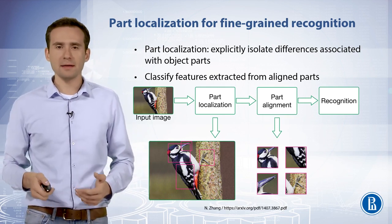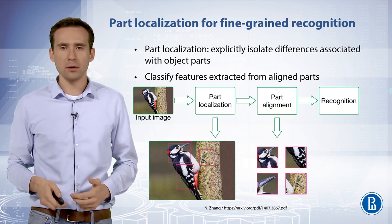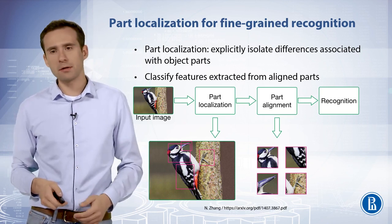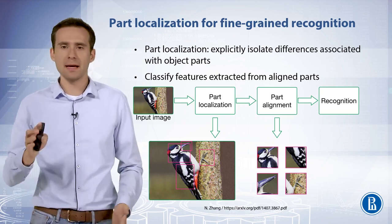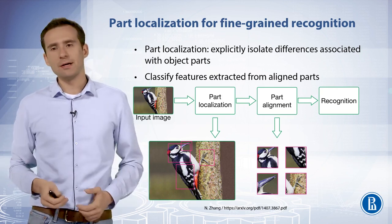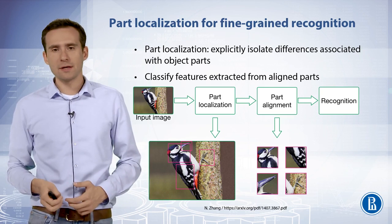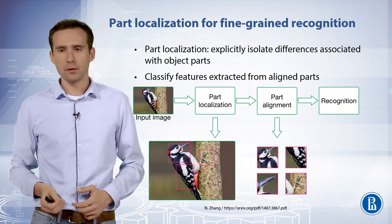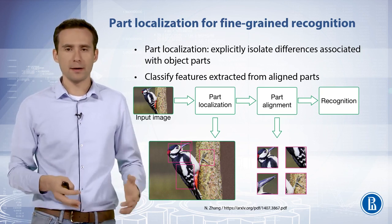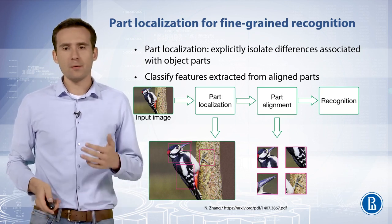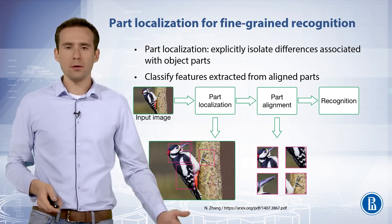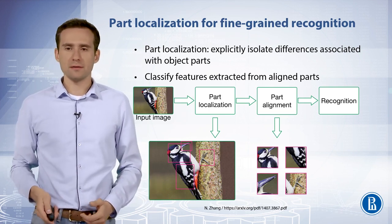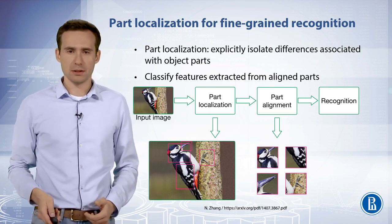At the final step, features for the predicted whole object and aligned part regions are extracted and concatenated using the network fine-tuned for that particular whole object or part. Then a one-versus-all classifier is trained using the final feature representation.